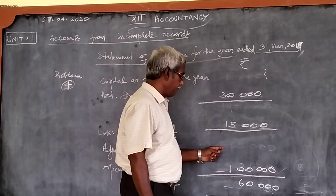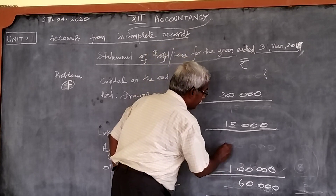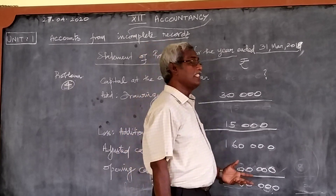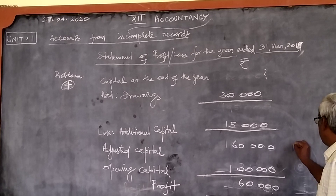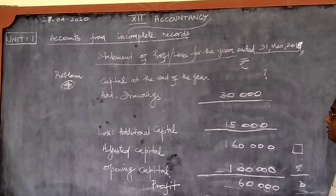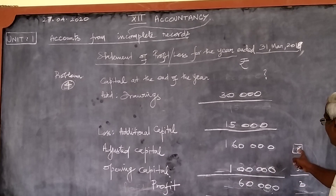From that number you should minus opening capital to get 60,000. So what number must be there? If there is 1,60,000 and if we minus 1 lakh we will get 60,000. Let me give a simple example. There should be some number. From that number you should minus 5 to get 3. What number must be there? You can guess it very easily because these are small numbers. From one number, if you minus 5 you will get 3.